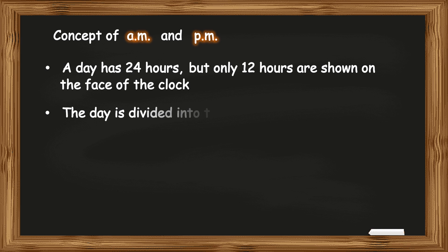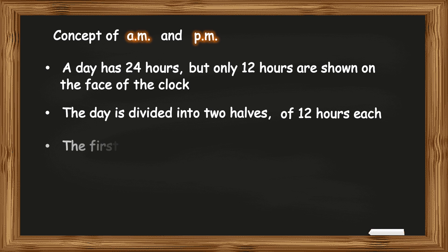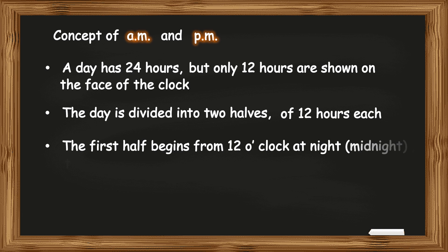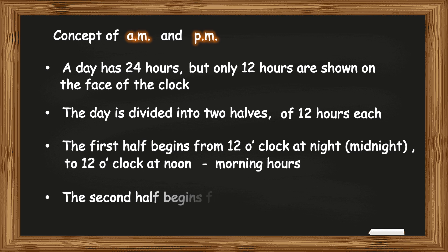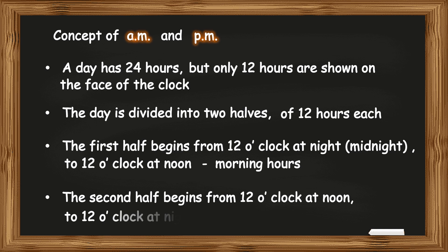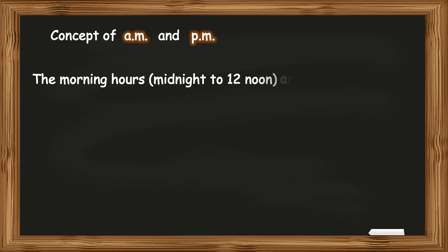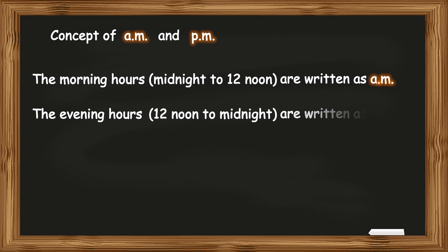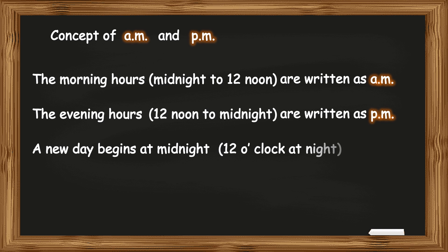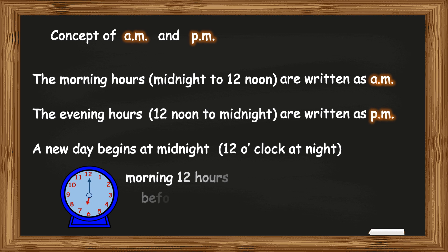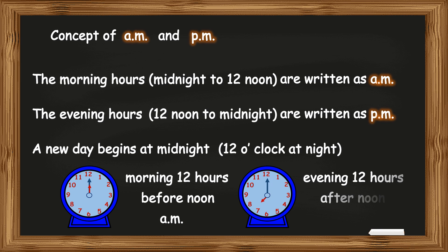Hence, the day is divided into two halves of 12 hours each. The first half begins from 12 o'clock at night, that is midnight, to 12 o'clock at noon, and these 12 hours are called the morning hours. The second half begins from 12 o'clock at noon to 12 o'clock at night. These 12 hours are called the afternoon or the evening hours. The morning hours from midnight to 12 noon are written as AM, and the evening hours from 12 noon to midnight are written as PM.